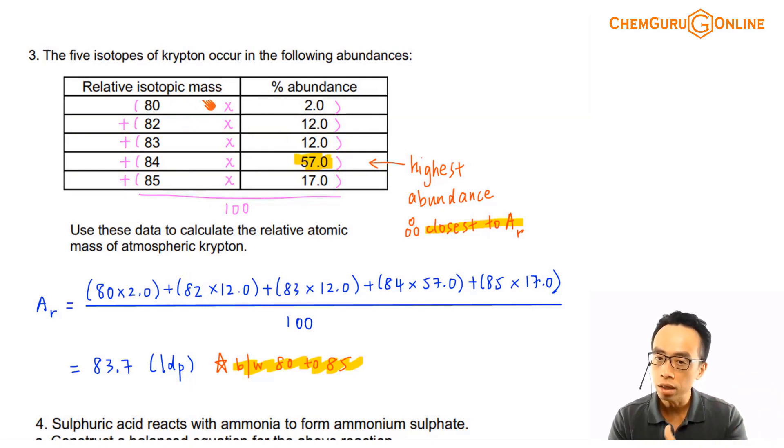I'll have 2% of Krypton-80, 12% of Krypton-82, 12% of Krypton-83, and so on. So all these percentages that I can find for each of these isotopes,